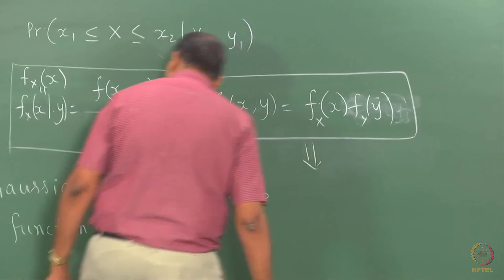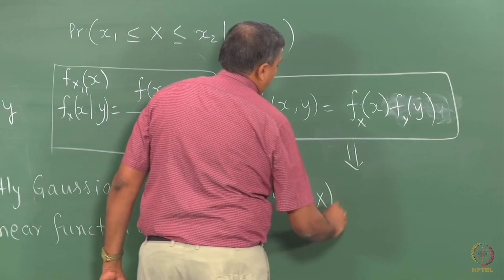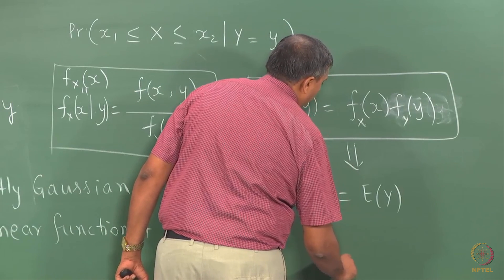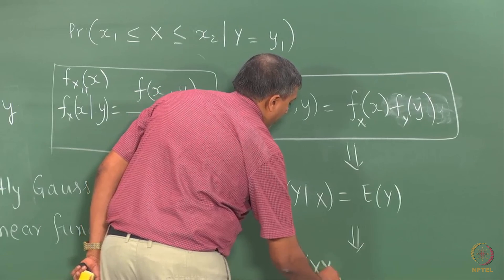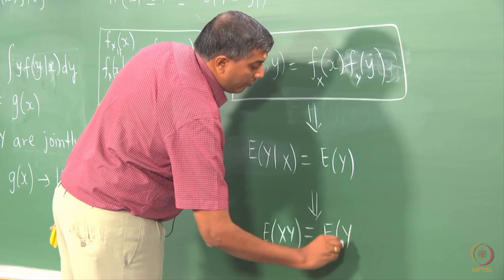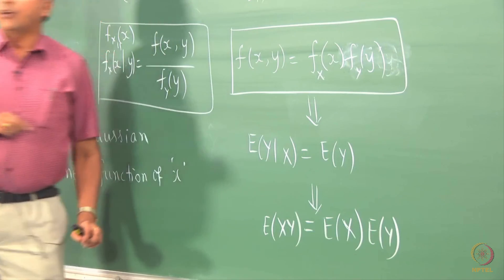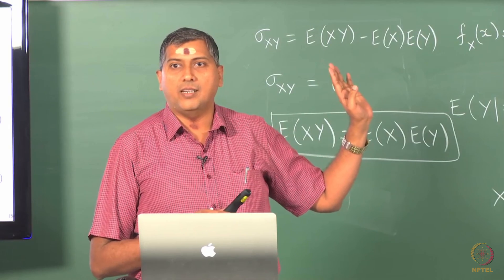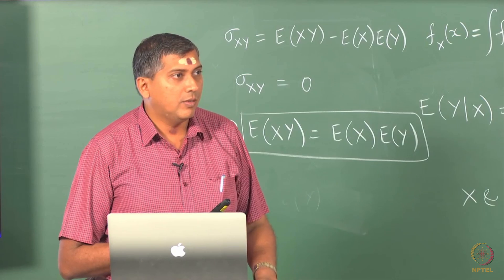Independence would mean that the conditional expectations, for example E(Y|X) = E(Y), and likewise for x as well. And then you could also have here uncorrelatedness implies certain things, but not the other way around. Independence implies everything, that the conditional expectation is the same as unconditional expectation, that the variables are uncorrelated, but not the other way around.